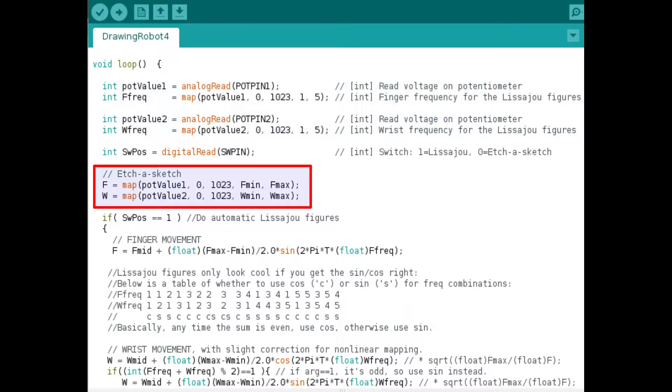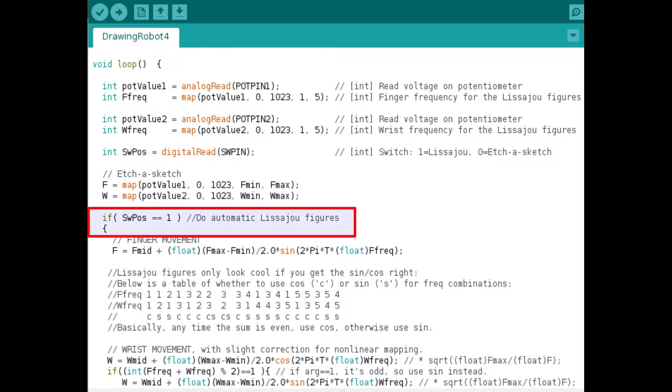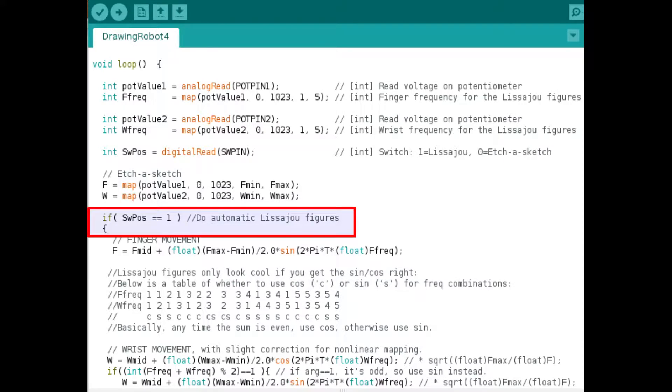And the next section here, we map those two range of values. And then we are into the switch here. So the switch pause one, the if statement that is determining which mode it's in.